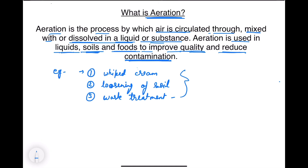So those are the three examples of aeration that we see in our day-to-day life. Aeration is the process in which we circulate, add, or mix air into substances or liquids for improving their quality, reducing contamination, or increasing degradation of waste material. Thank you.